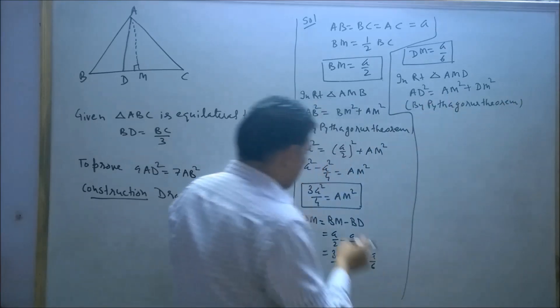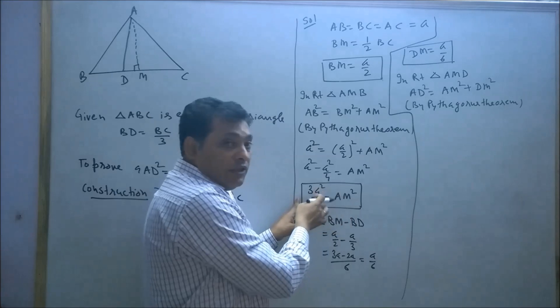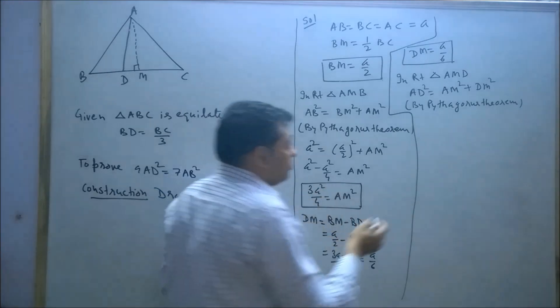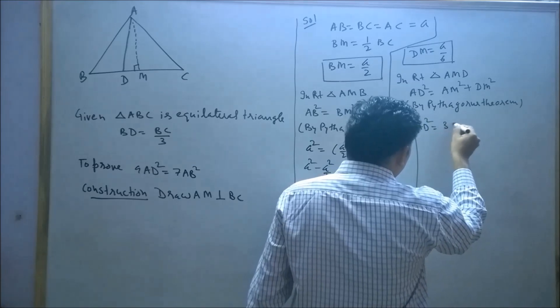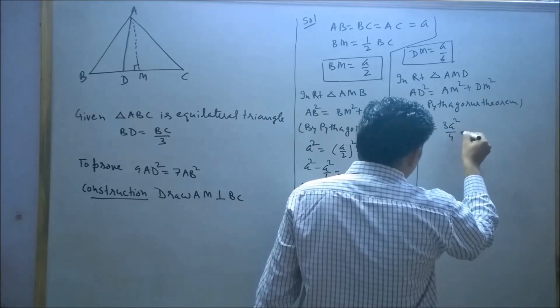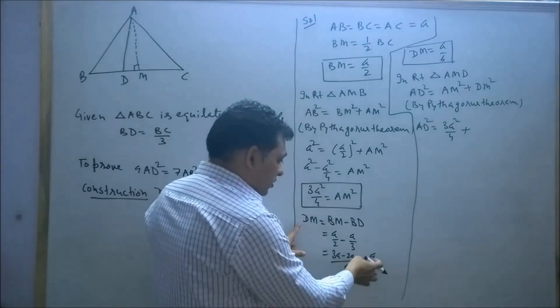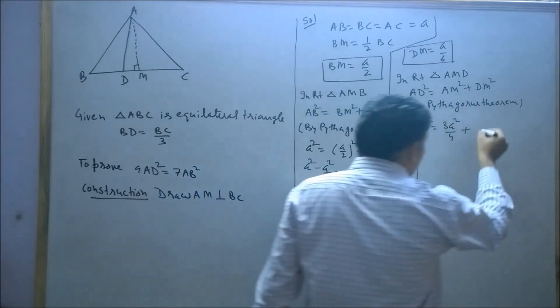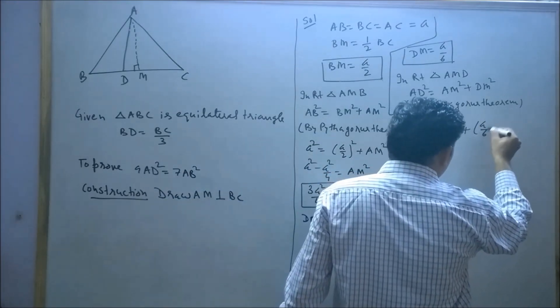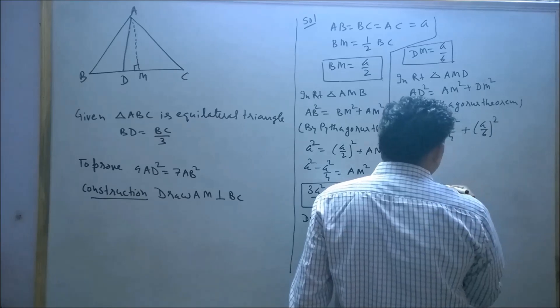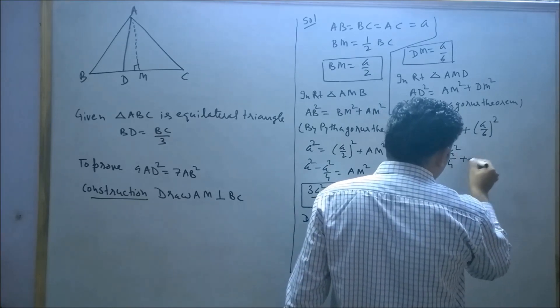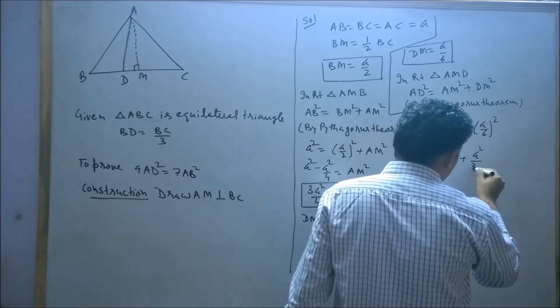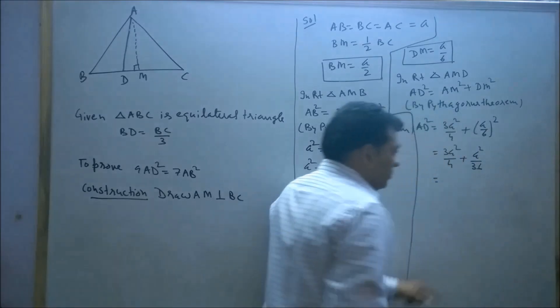We have already found AM² equals 3a²/4. So AD² equals 3a²/4 plus DM². We found DM is a/6, so AD² equals 3a²/4 plus (a/6)², which equals 3a²/4 plus a²/36.